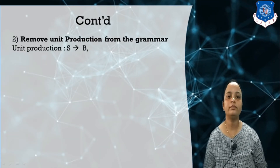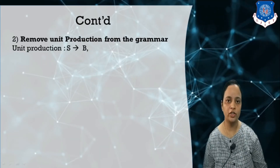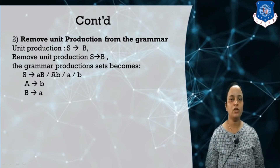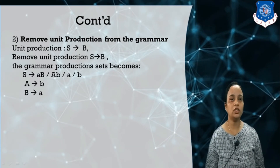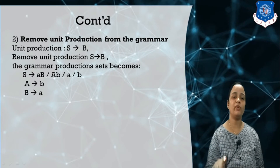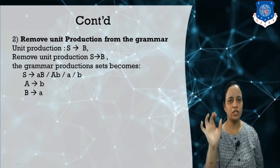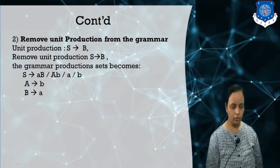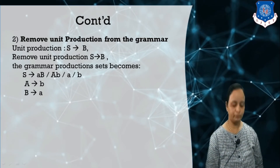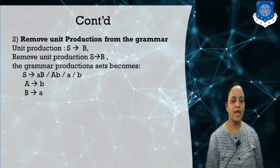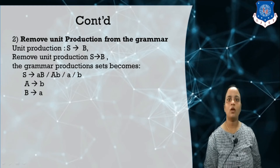Remove the unit production. After removing, you can see S derives B. To remove this unit production, in place of B we put B's right-hand side productions. So S now derives what B derived: S derives a.